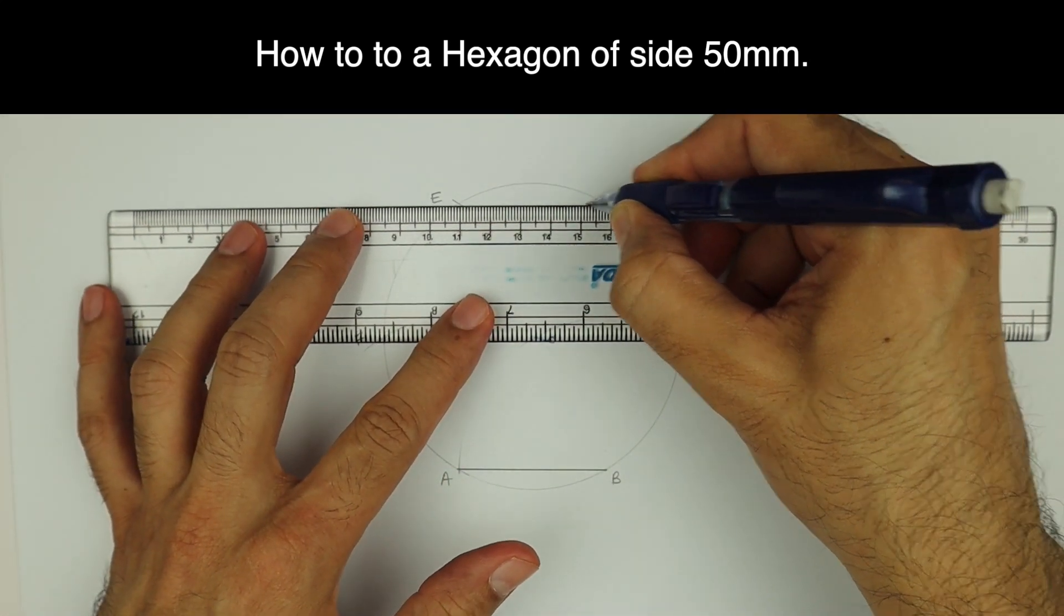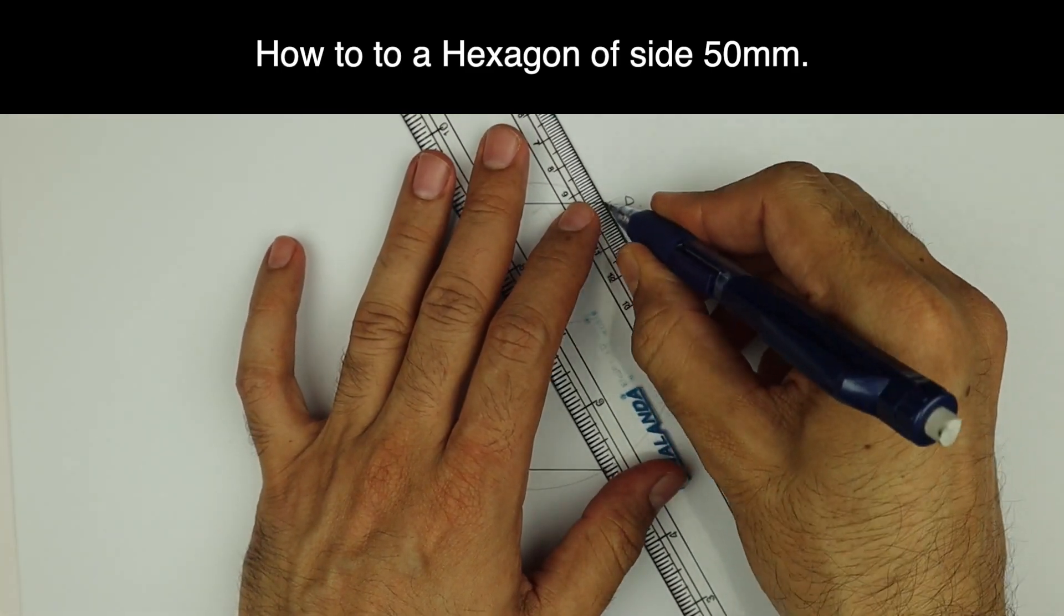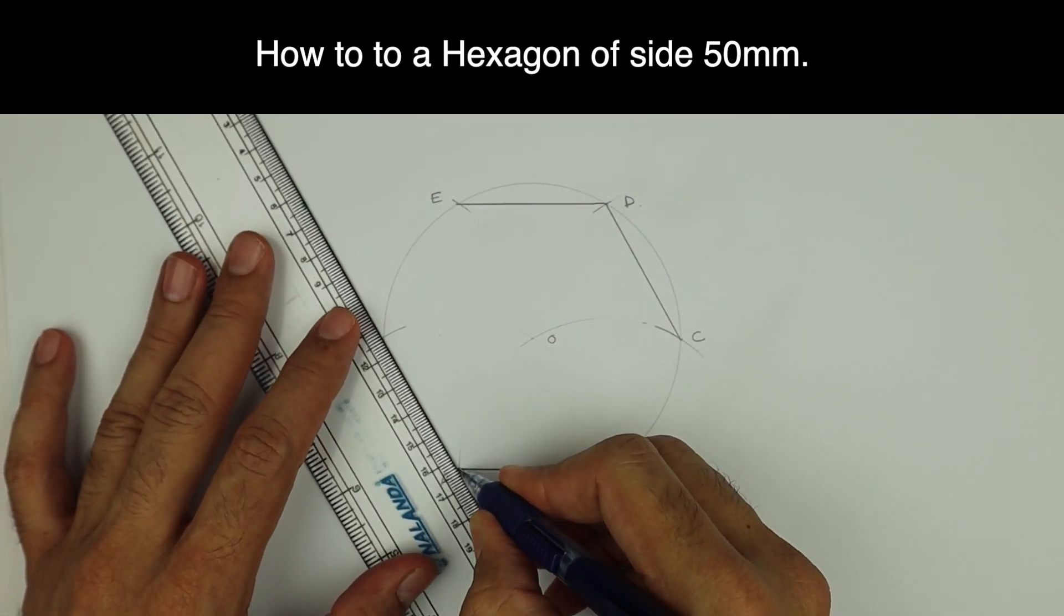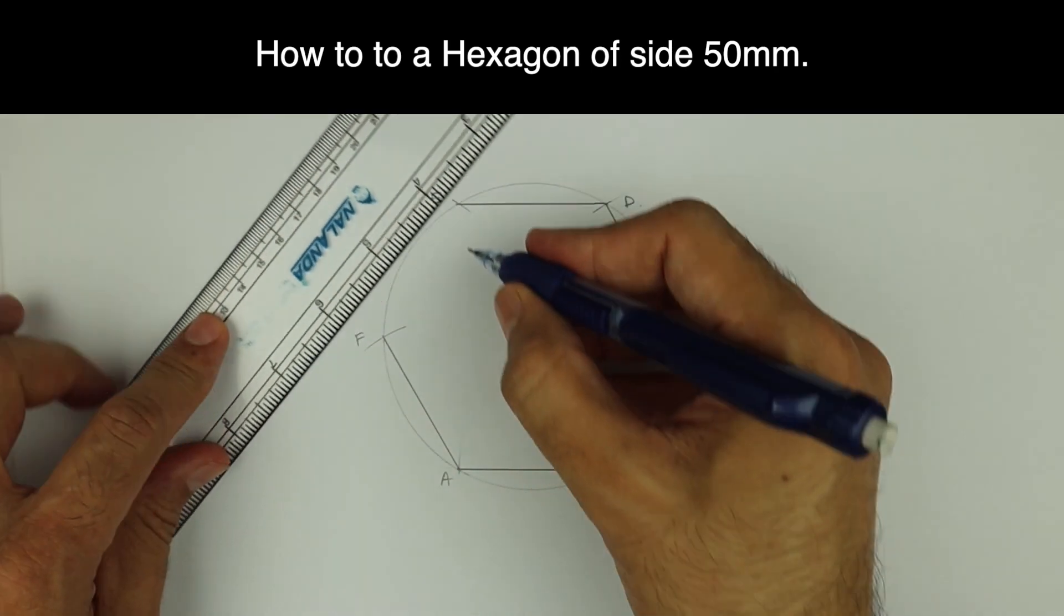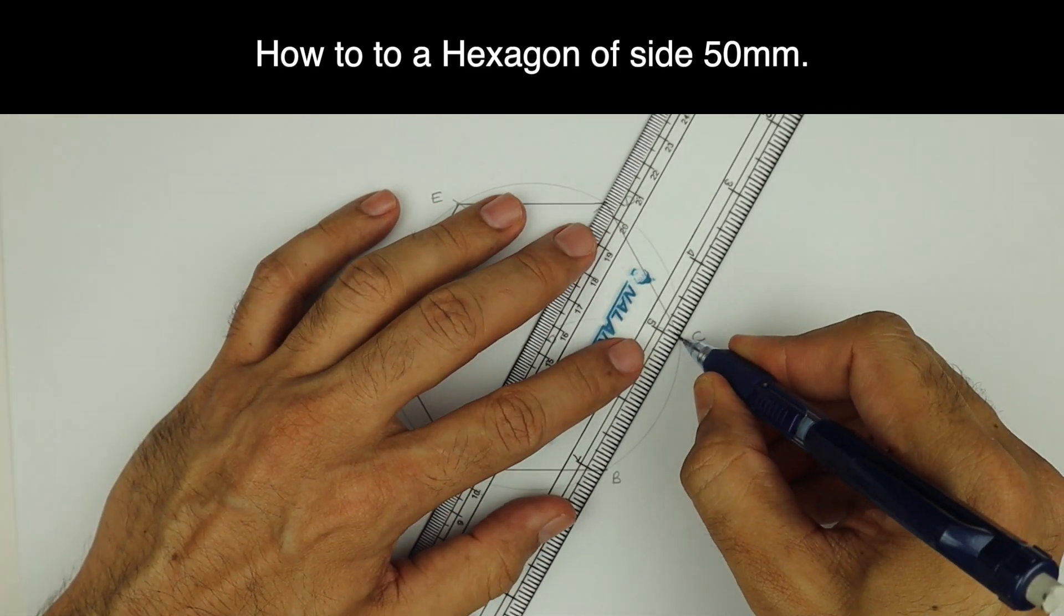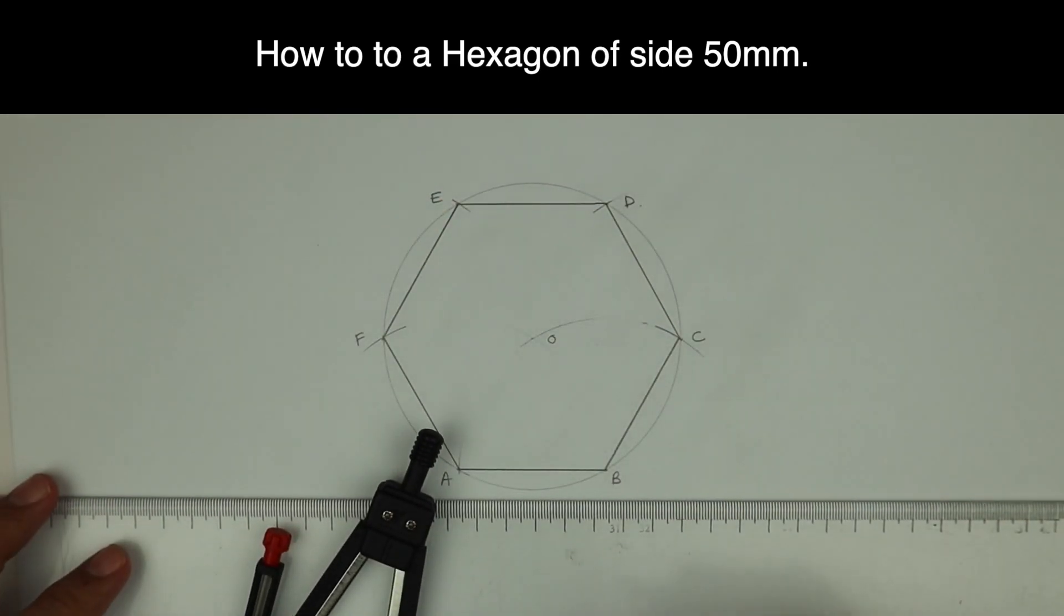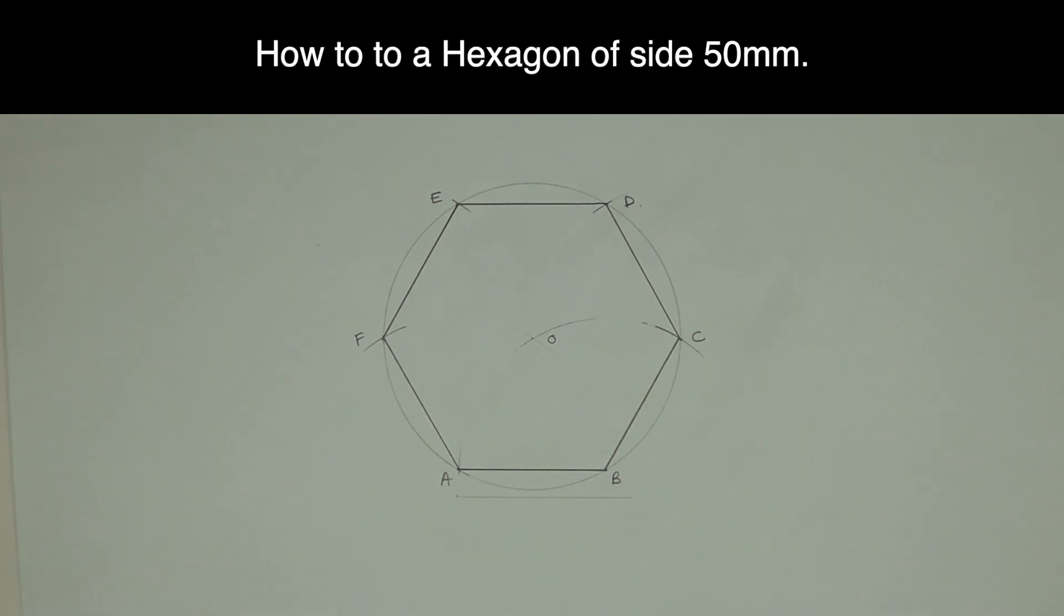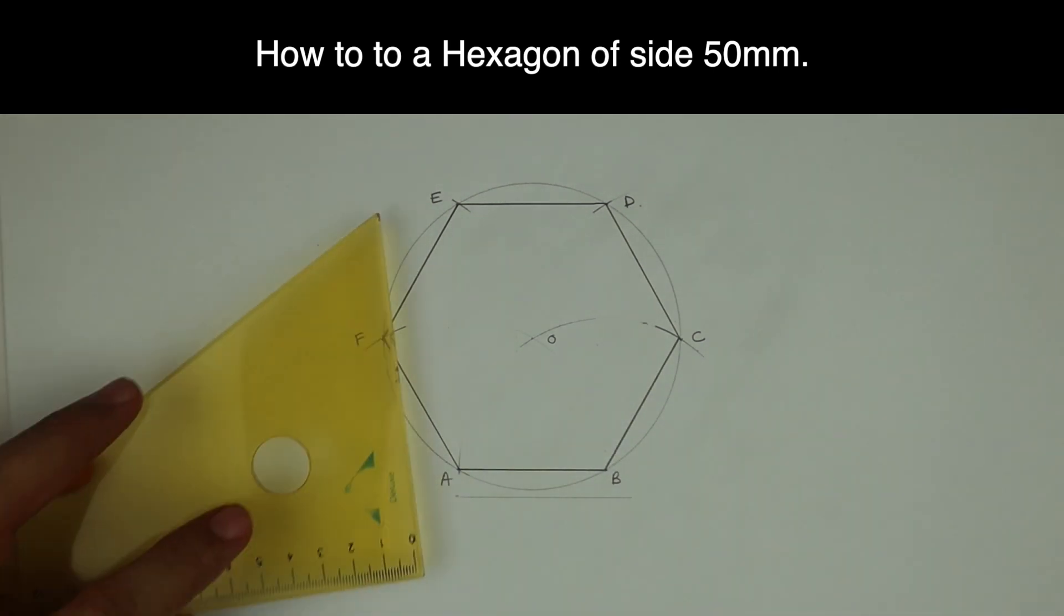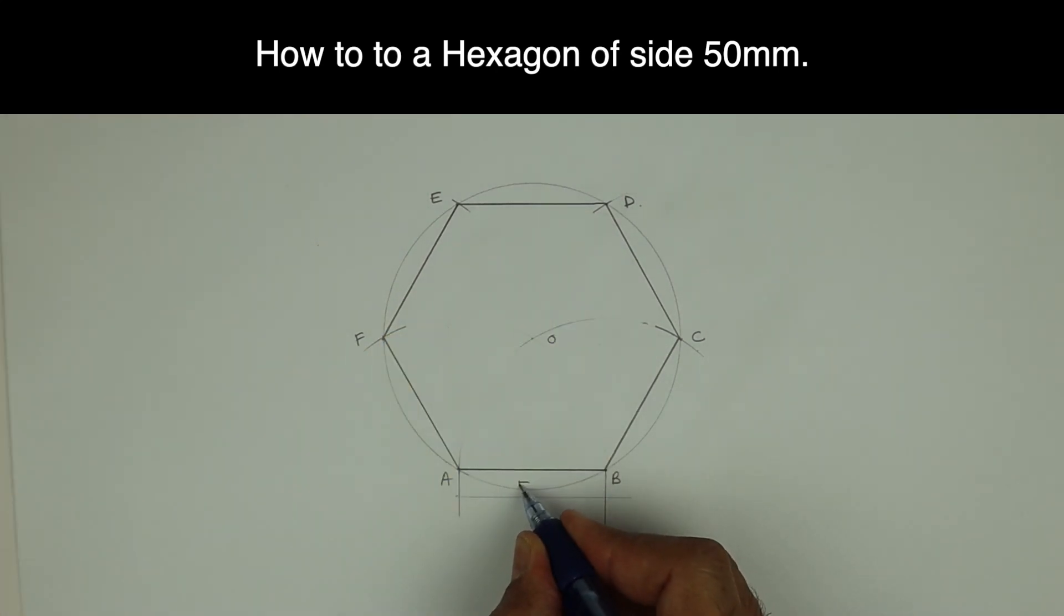So what do you get? You get a hexagon. We can do dimensioning. Thank you.